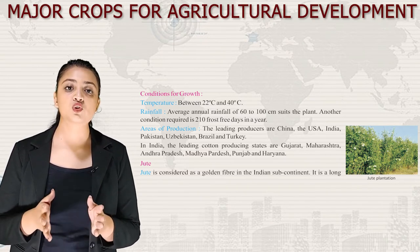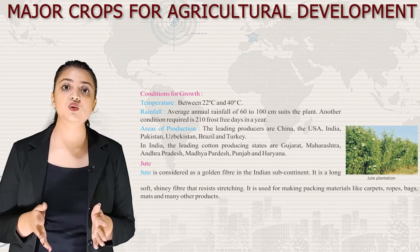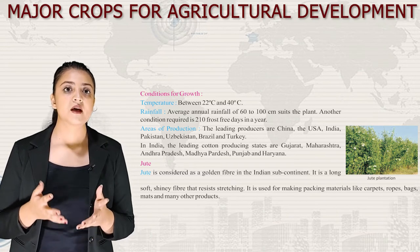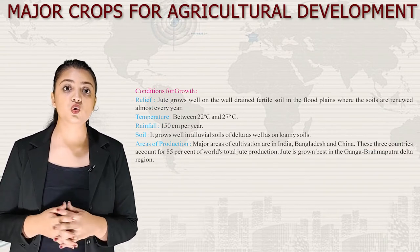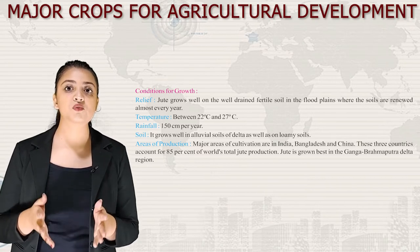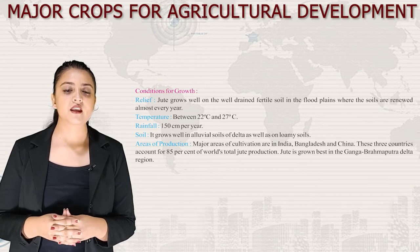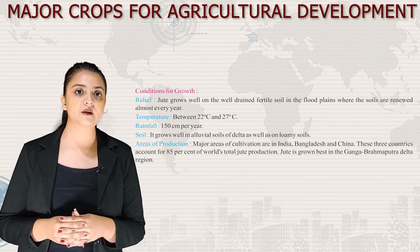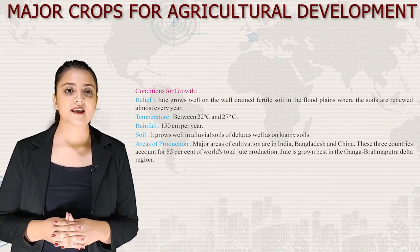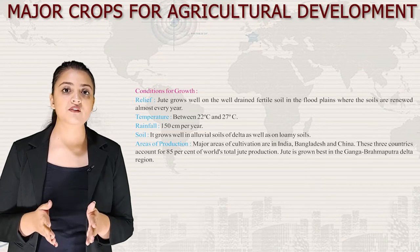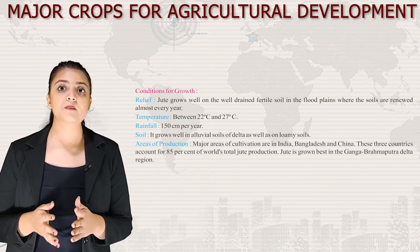Next we have jute — considered the golden fiber of the Indian subcontinent. It is a long, soft, shiny fiber that resists stretching, used for making packing materials like carpets, ropes, bags, mats and many other products. Conditions for growth: it grows well on well-drained fertile floodplain soils, temperature 22°C to 27°C, rainfall 150 cm per year, and it thrives in alluvial and loamy soils. Major areas of cultivation are India, Bangladesh and China, which account for 85% of world jute production. Jute is grown best in the Ganga-Brahmaputra Delta region.